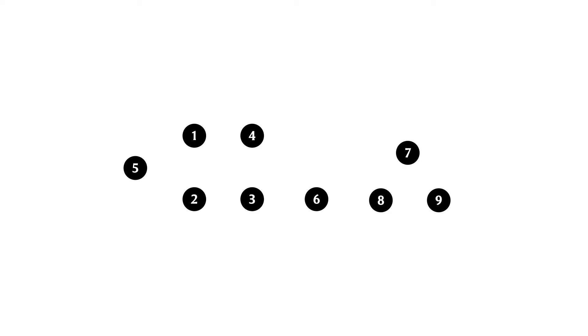To begin with, every element is a singleton set and is the leader of its own set. We will use dark black circles to signify that an element is currently a leader, and as we go along the ones that are not representatives will fade. Let's say we first add an edge between elements 1 and 2, giving us one connected component with two vertices. We invoke the union operation on the endpoints, combining 1 and 2 into one set. This currently has two representatives, which violates our convention, so we need to identify a single leader element.